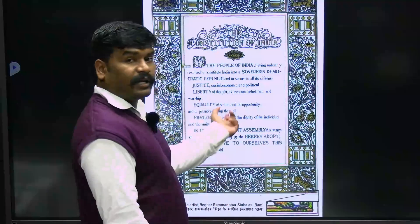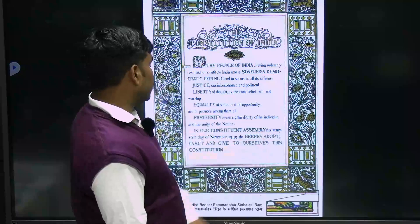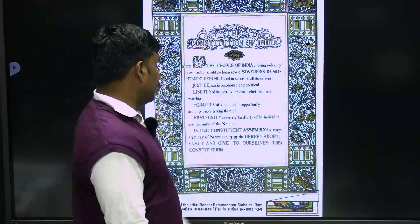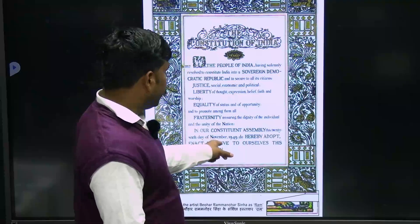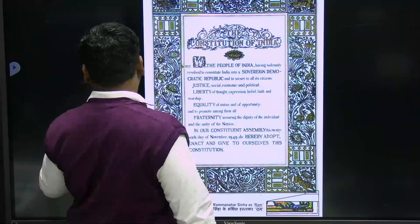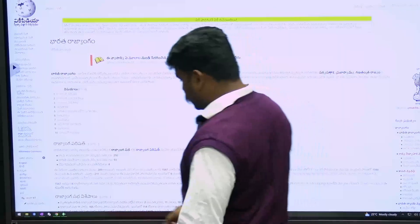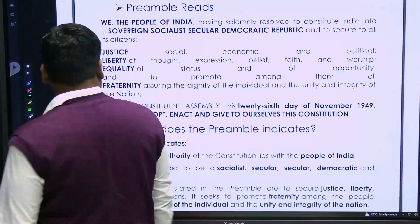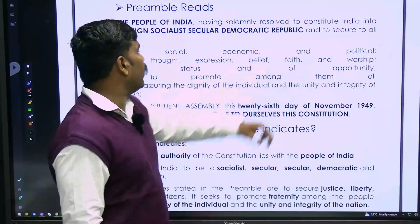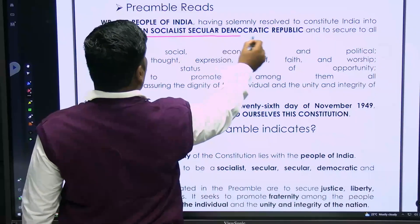In our Constituent Assembly, this 26th day of November 1949, we hereby adopt, enact, and give to ourselves this constitution. The original preamble reads 'sovereign democratic republic,' while the present running constitution has the words 'sovereign, socialist, secular, democratic republic.'